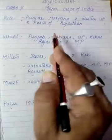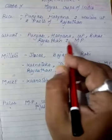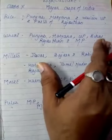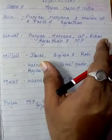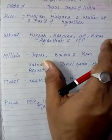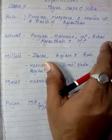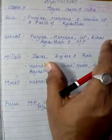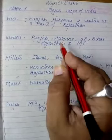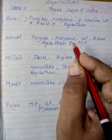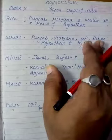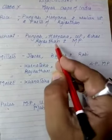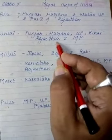Wheat requires an annual rainfall of 50 to 75 cm. There are two important wheat growing zones in the country: the Ganga-Satluj plain in the northwest, and the black soil region of the Deccan. These are the main regions of wheat production.